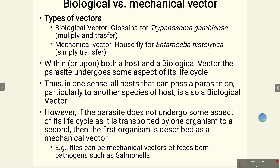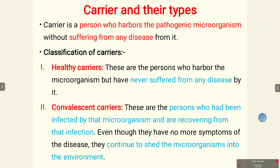A carrier is a person who harbors a pathogen but does not show symptoms. In certain cases, they may act as a source of pathogenic strains, and immunocompromised individuals in contact with them are at risk of infection. A carrier harbors the pathogenic microorganism without suffering any disease. Carriers can be classified into two types: healthy carriers, who show no symptoms, and convalescent carriers.